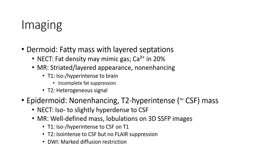In imaging, dermoid appears as a fat mass with layering. Non-contrast CT shows low density that may mimic gas, with calcification in 20%. On MRI, it shows a stratified layered appearance and is non-enhancing. T1 shows iso- to hyperintense signal relative to brain with incomplete fat suppression. T2 shows heterogeneous signal.